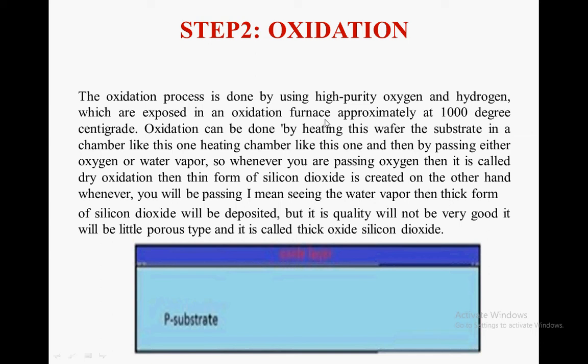By passing either oxygen or water vapor into the chamber: whenever you pass oxygen, it is called dry oxidation, and a thin form of silicon dioxide is created. On the other hand, whenever you pass water vapor, a thick form of silicon dioxide will be deposited, but it will be slightly porous — this is called thick oxide silicon dioxide.